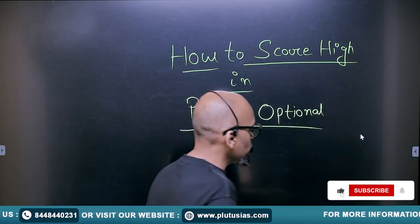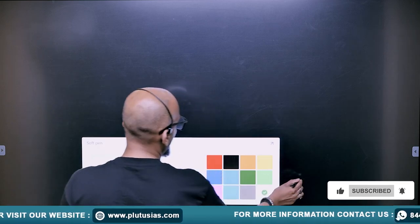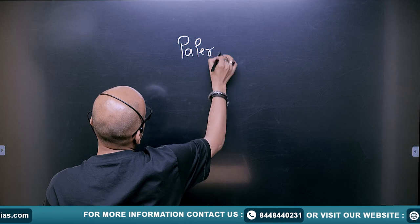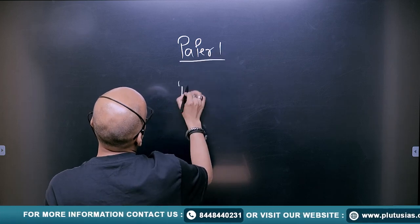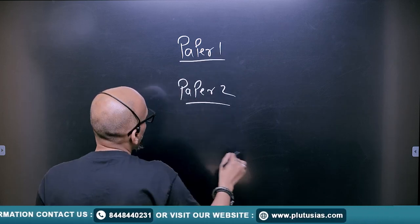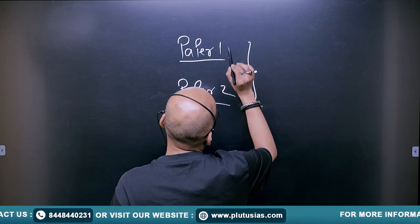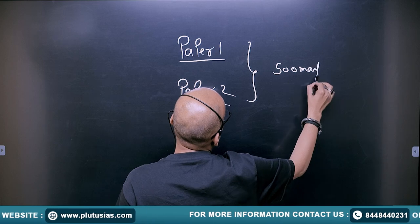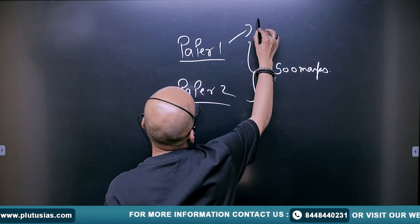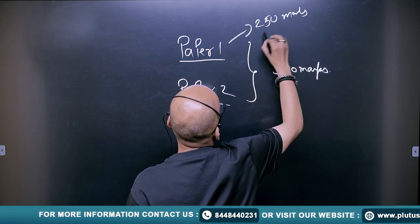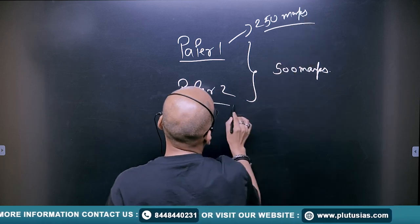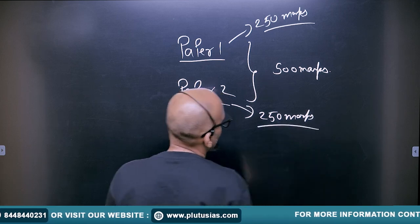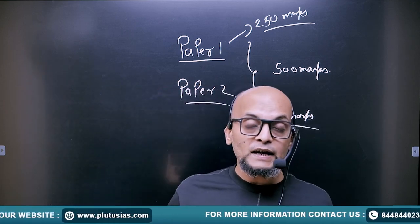As you all are aware, just like any other optional subject, Physics is also segregated into two portions: paper 1 and paper 2. Both of these papers are of 250 marks each, making it 500 marks in total. This is of 250 marks and this is also of 250 marks. The total comes to 500 marks.